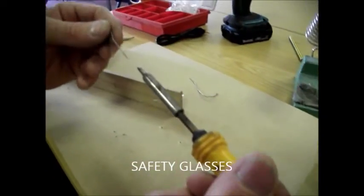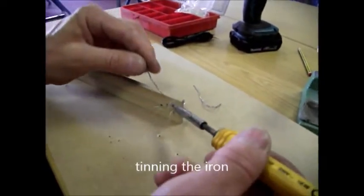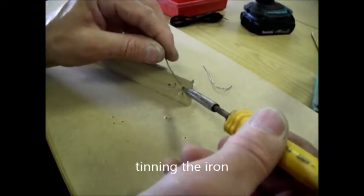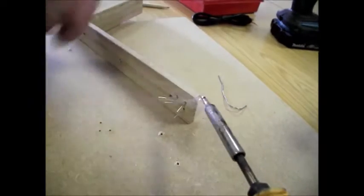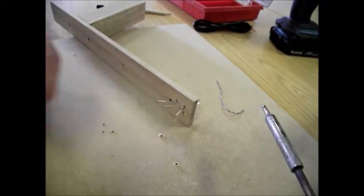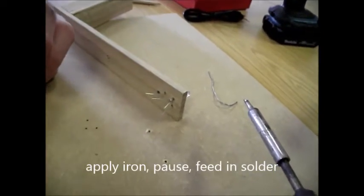Right, take a bit of solder. Touch it on the end of the iron, that's called tinning the iron. And then apply that to the twisted ends of the legs of the LED and the resistor. Feed a little bit more soldering and it'll just flow onto the join. There'll be a slight pause and it'll flow onto the join.